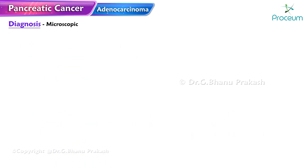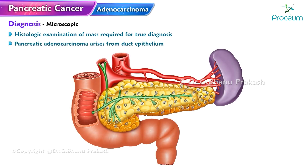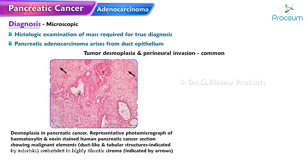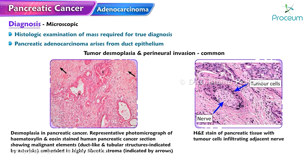Histologic examination of the mass is required for a true diagnosis of pancreatic cancer. Pancreatic adenocarcinoma arises from the duct epithelium. Tumor desmoplasia and perineural invasion are common features. The most common site of metastases is the liver.